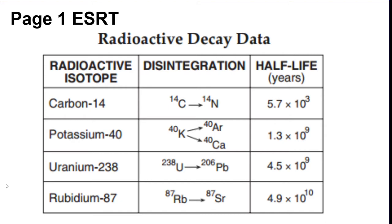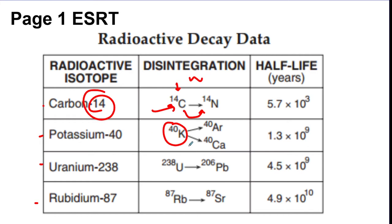We're going to start with radioactive decay. This chart is on the top left corner of page one of the reference table. There are four radioactive isotopes: carbon-14, potassium-40, uranium-238, and rubidium-87. The disintegration column shows what each isotope turns into over time. Carbon-14 turns into nitrogen-14, K-40 turns into its products, uranium turns into its products, and rubidium turns into its product.